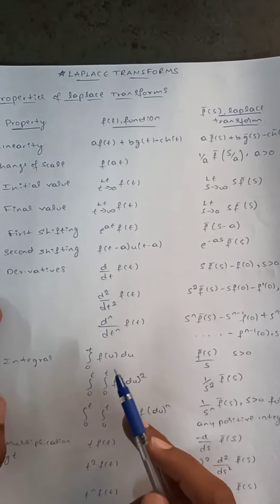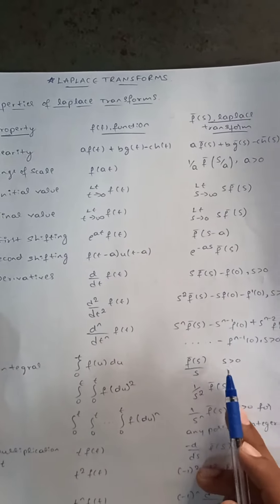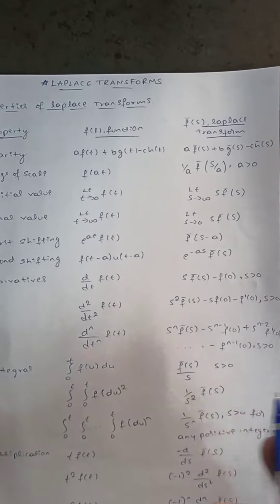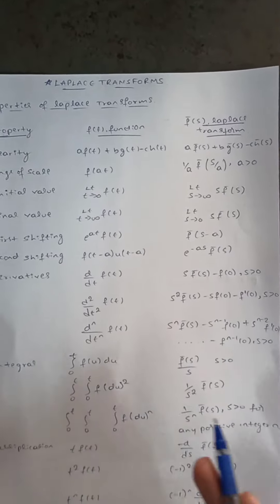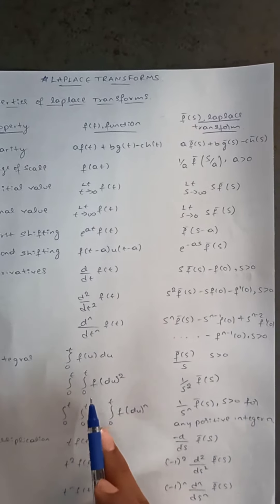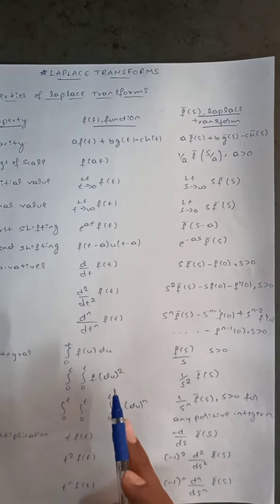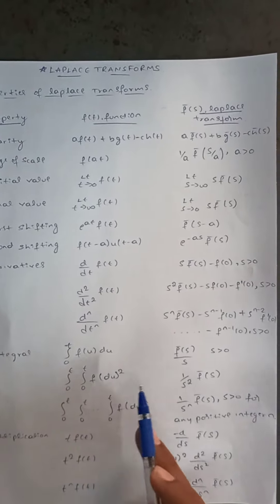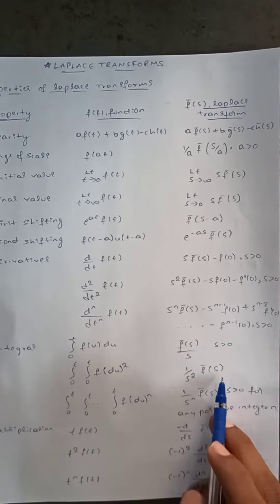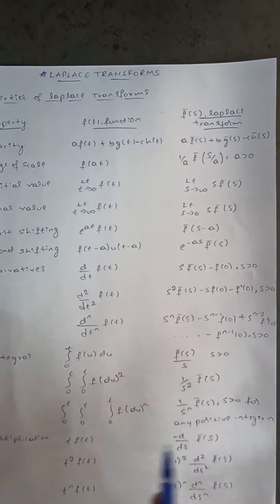Integration from 0 to t of f gives f̄(s)/s, where s is greater than zero. Similarly, double integration from 0 to t of f(u) du squared equals (1/s²)·f̄(s).